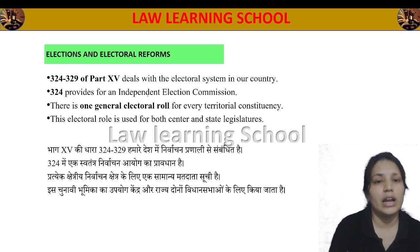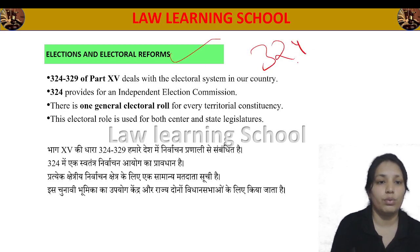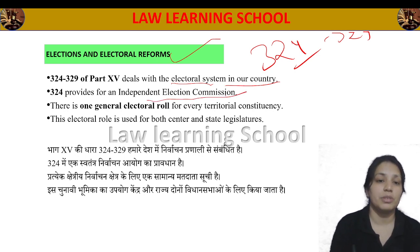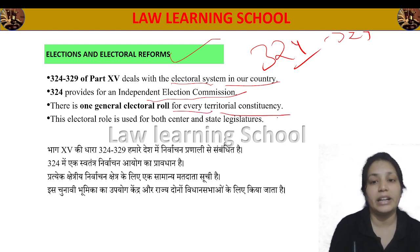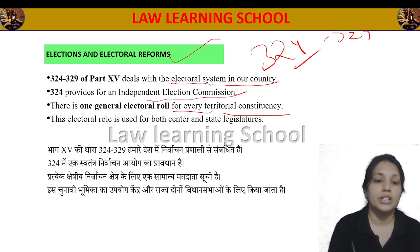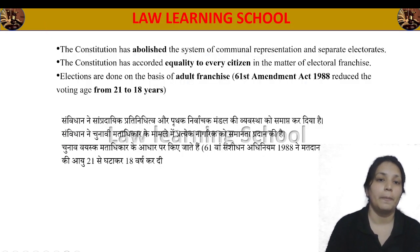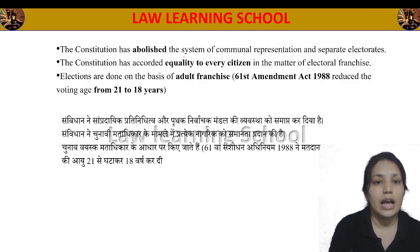Now let's talk about elections and electoral reforms. Articles 324 to 329, Part 15, deal with the electoral system in our country. Article 324 provides for an independent Election Commission. There is one general electoral roll for every territorial constituency, and this electoral roll is used for both central and state legislature elections. The constitution has abolished the system of communal representation and separate electoral rolls.